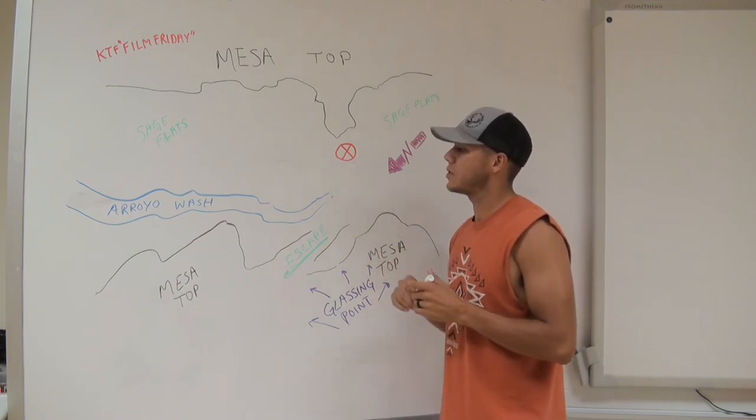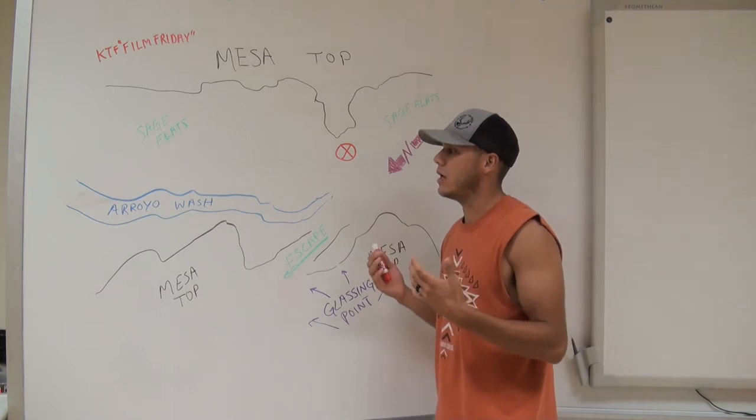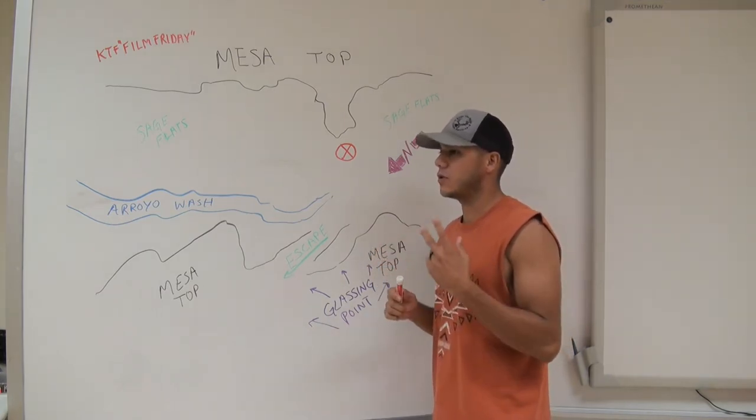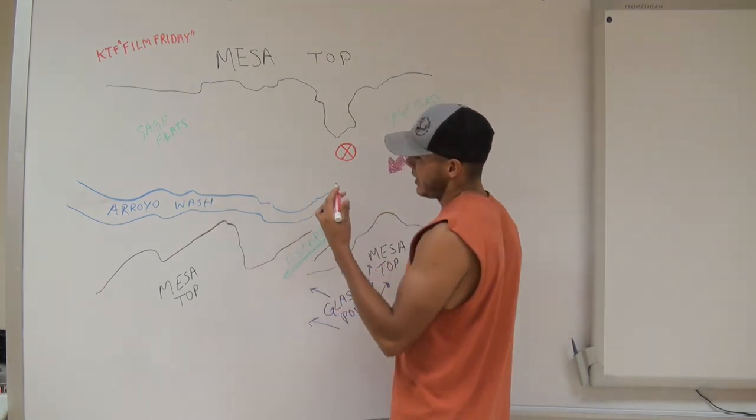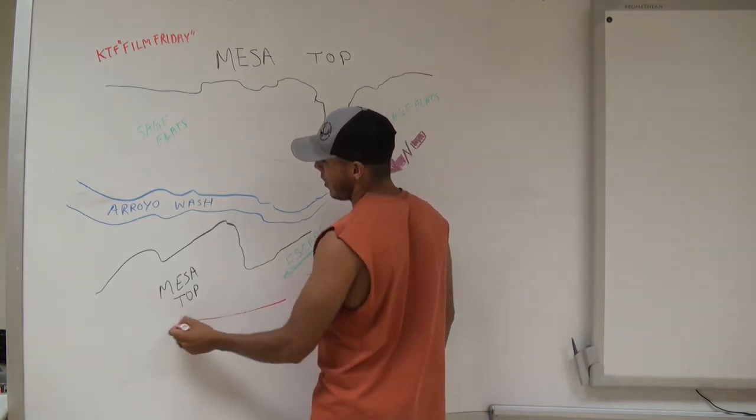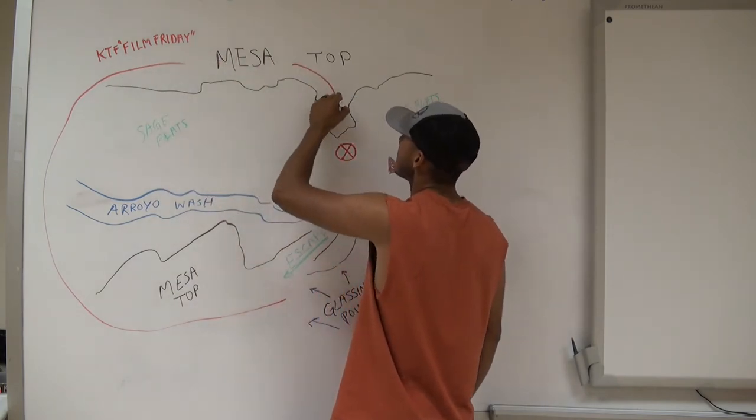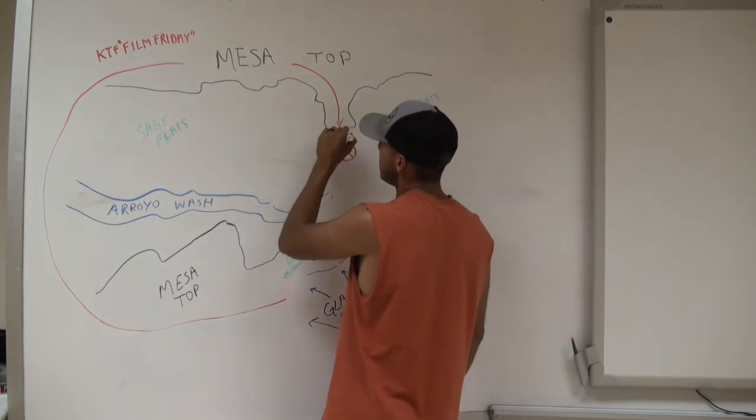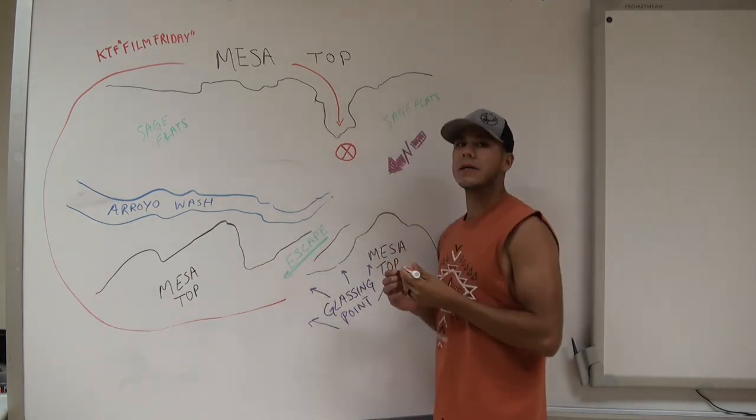Looking at it, we came to the conclusion that the best way, maybe what we could do - there's two of us hunting, we both had tags - we're going to send one guy from the glassing point all the way around on top of them, coming on top of them right here. Coming from the top of this little point on the mesa, it was going to be about a 40-yard shot to that buck down in the bottom.